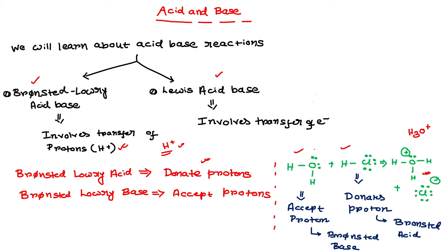The water molecule accepts a proton and becomes H₃O⁺, so according to Bronsted-Lowry theory it is a Bronsted-Lowry base because it accepts the proton. On the other hand, hydrochloric acid HCl donates a proton and becomes Cl⁻, so according to the Bronsted-Lowry theory it is the Bronsted-Lowry acid. This simple example identifies which is the acid and which is the base.